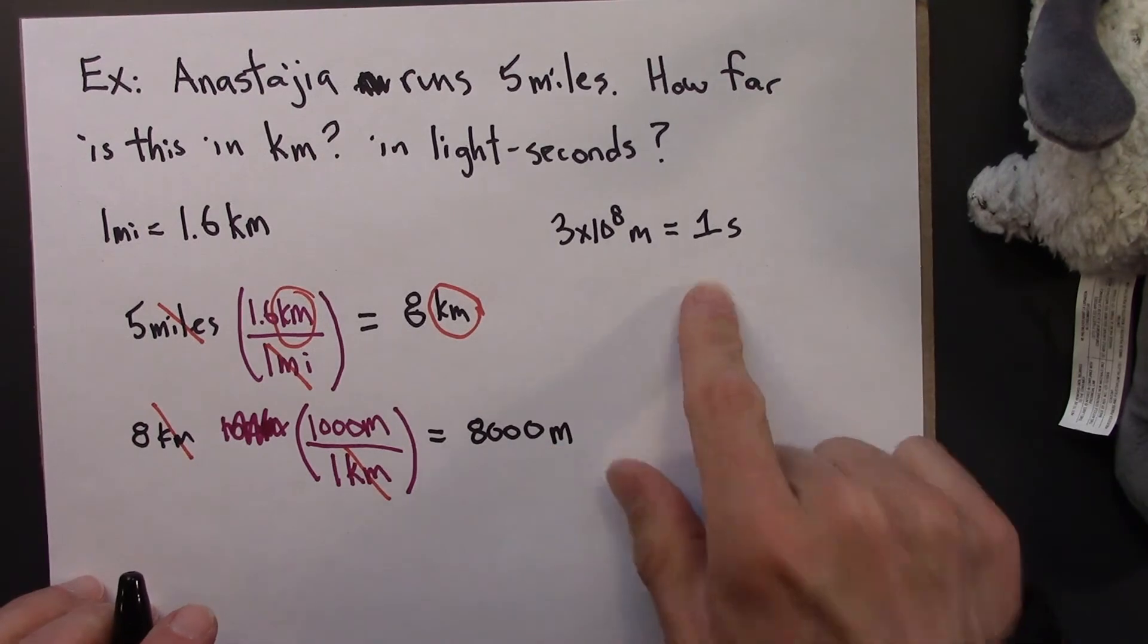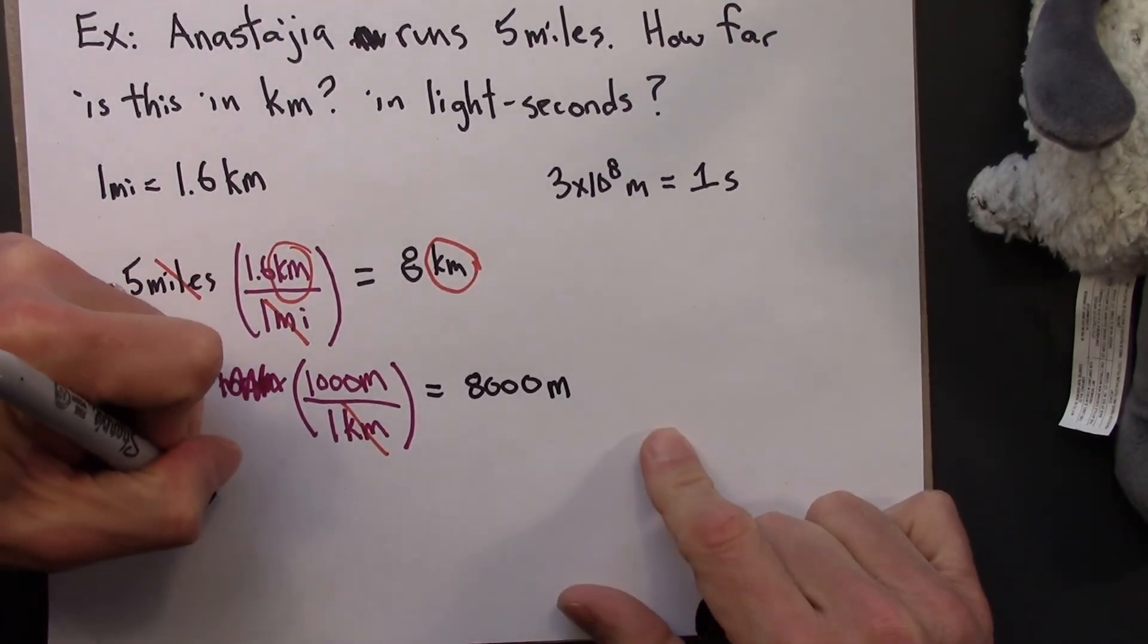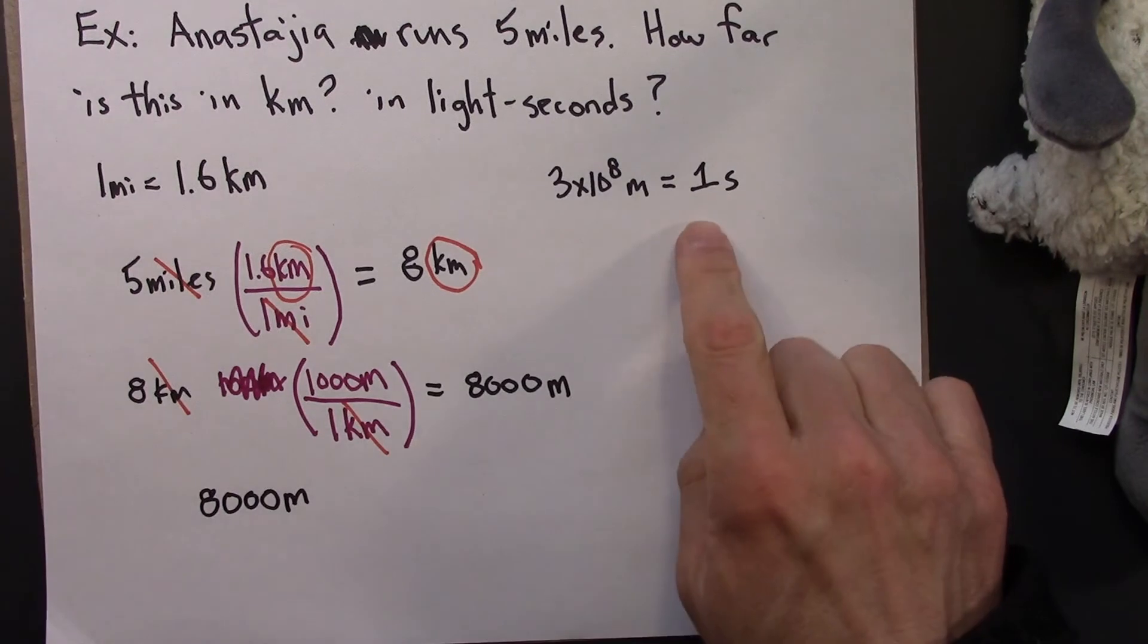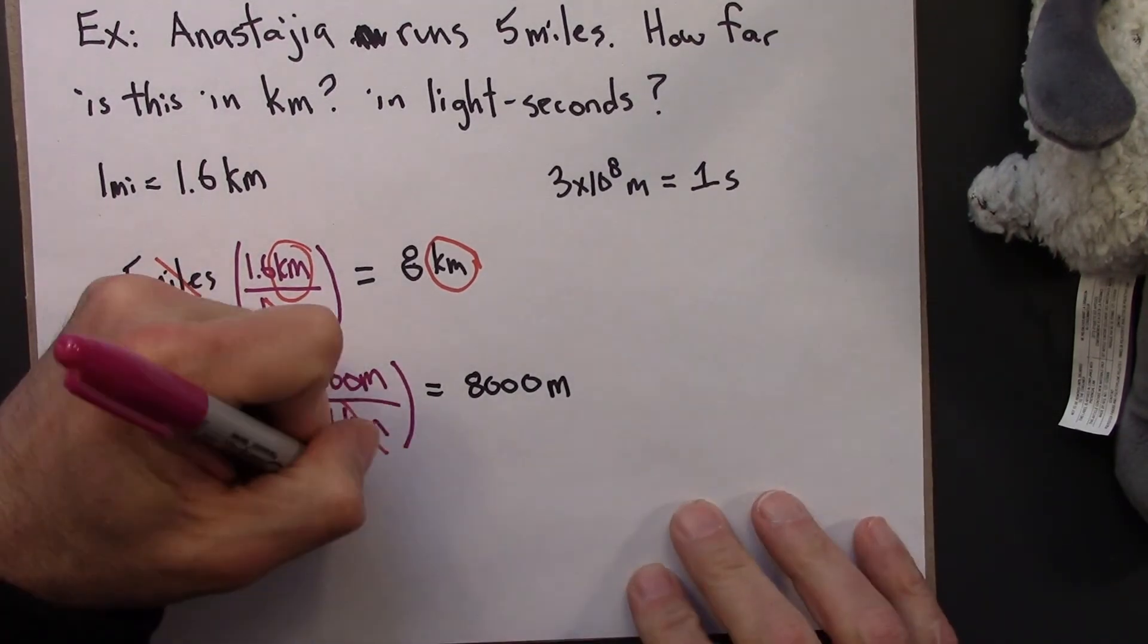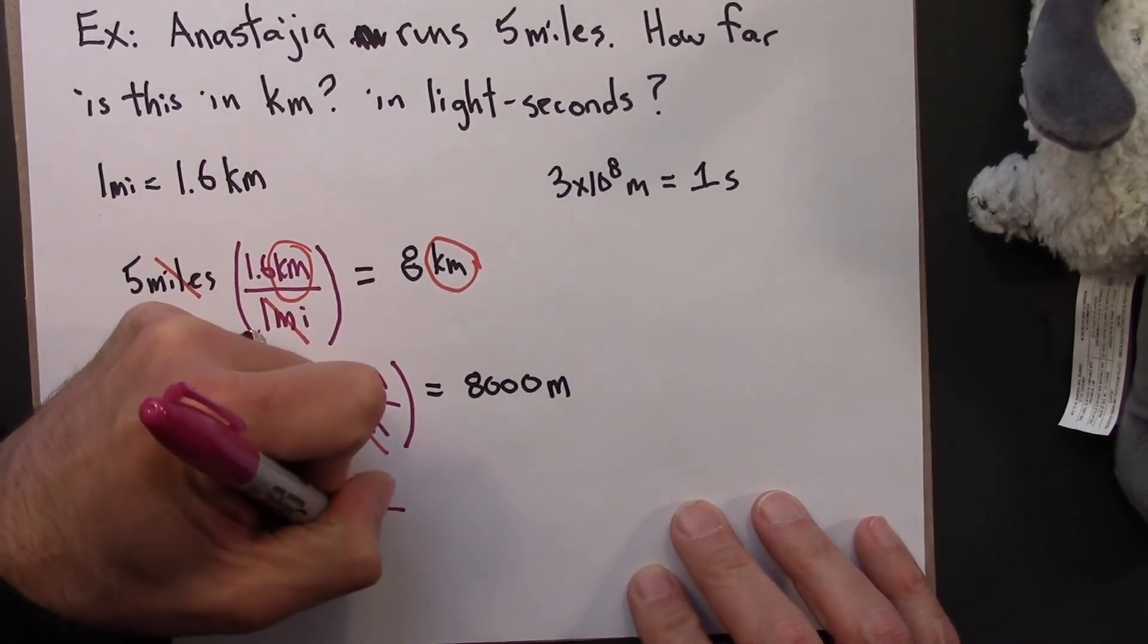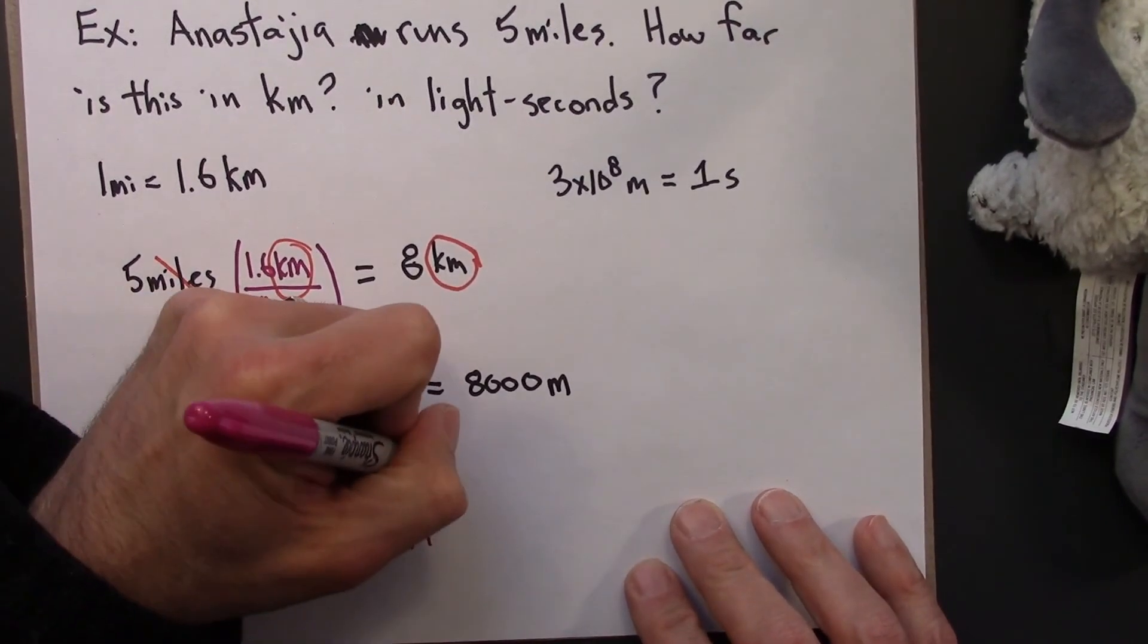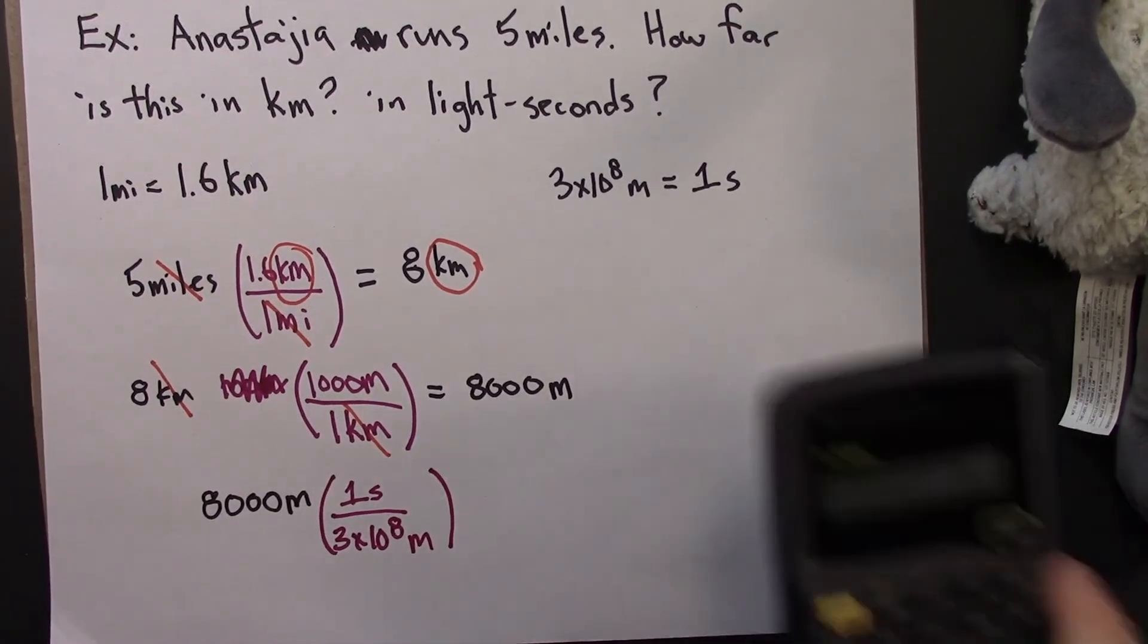Alright. So now let's go from meters into seconds. So 8,000 meters. And I'm going to use this conversion factor. That 1 second, 1 light second, is the same as 3 times 10 to the 8th meters. Alright. So let's evaluate this.